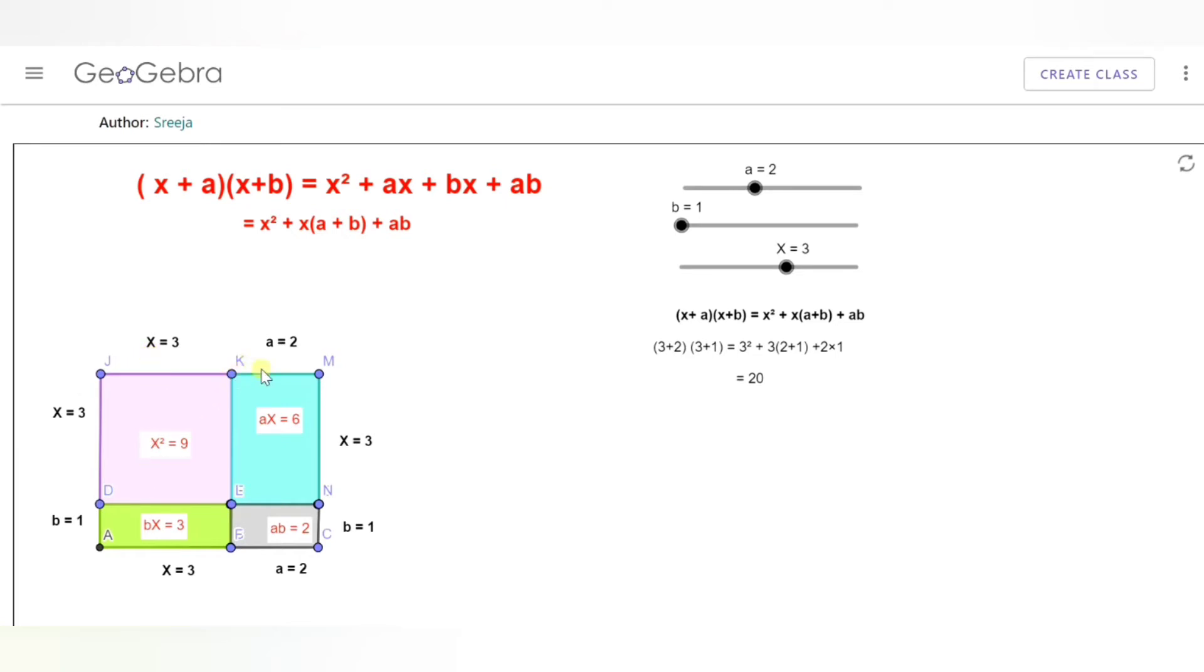The next part is KMNE which is a rectangle with sides a and x, so its area would be ax. Then I have the rectangle DEFA with sides b and x, so its area would be bx.